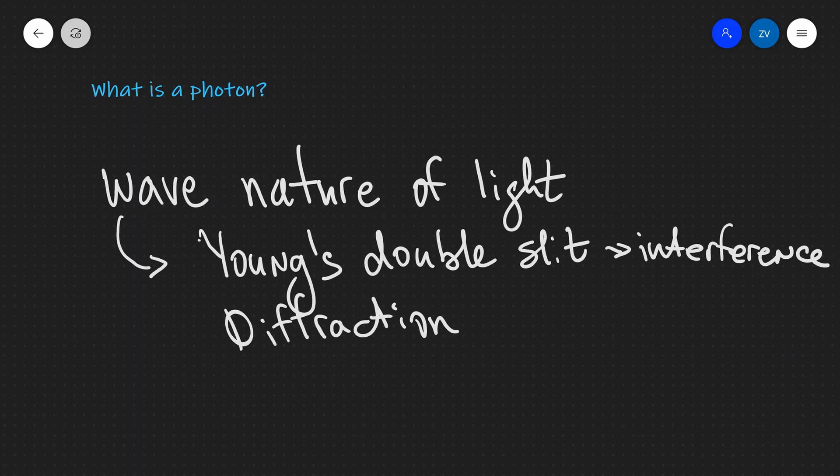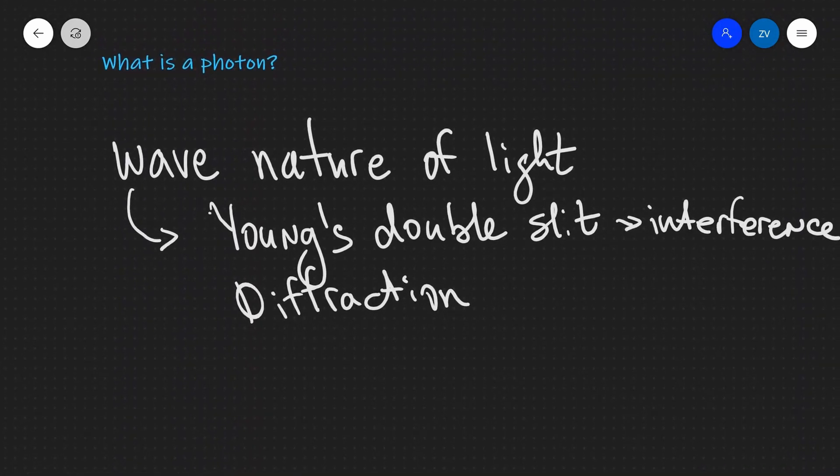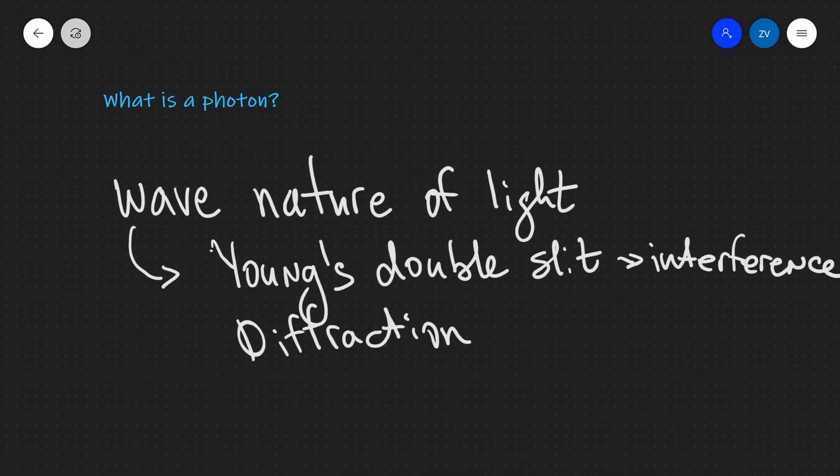Now in quantum physics, this may be a little bit confusing, but we're going to be looking at some experiments which also conclusively show the particle nature of light. A particle of light is actually known as a photon.